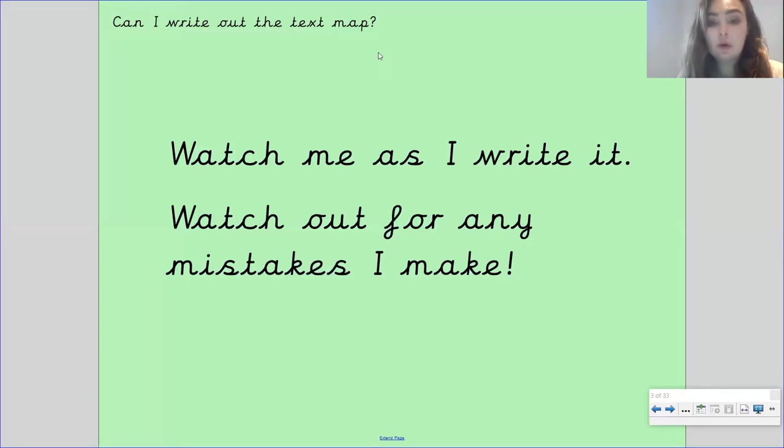Okay, so now you're going to watch me write part of the text map and I really want you to watch out for any mistakes that I may make. Now, when you're writing out your own text map, I want you to make sure that you've got another coloured pencil or pen, so like a purple polishing pen to correct any mistakes that you may make. So let me share my book with you now.